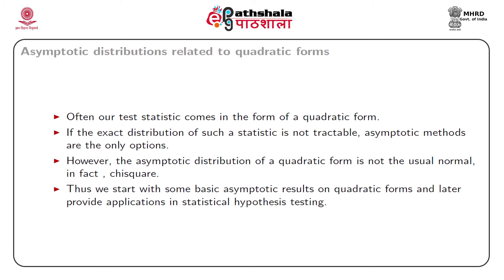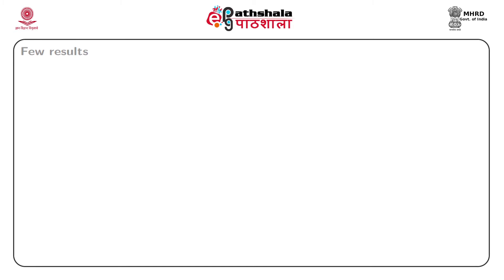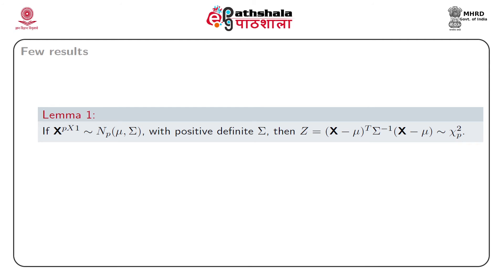We start with some basic asymptotic results on quadratic forms and later provide applications in statistical hypothesis testing. We start with some auxiliary results before proceeding to our general result of interest, beginning with Lemma 1. If the p-component vector x has a p-variate normal distribution with mean mu and dispersion matrix sigma, where sigma is assumed to be positive definite, then the quadratic form z defined as (x - mu)-transpose times sigma-inverse times (x - mu) has a chi-square distribution with p degrees of freedom.